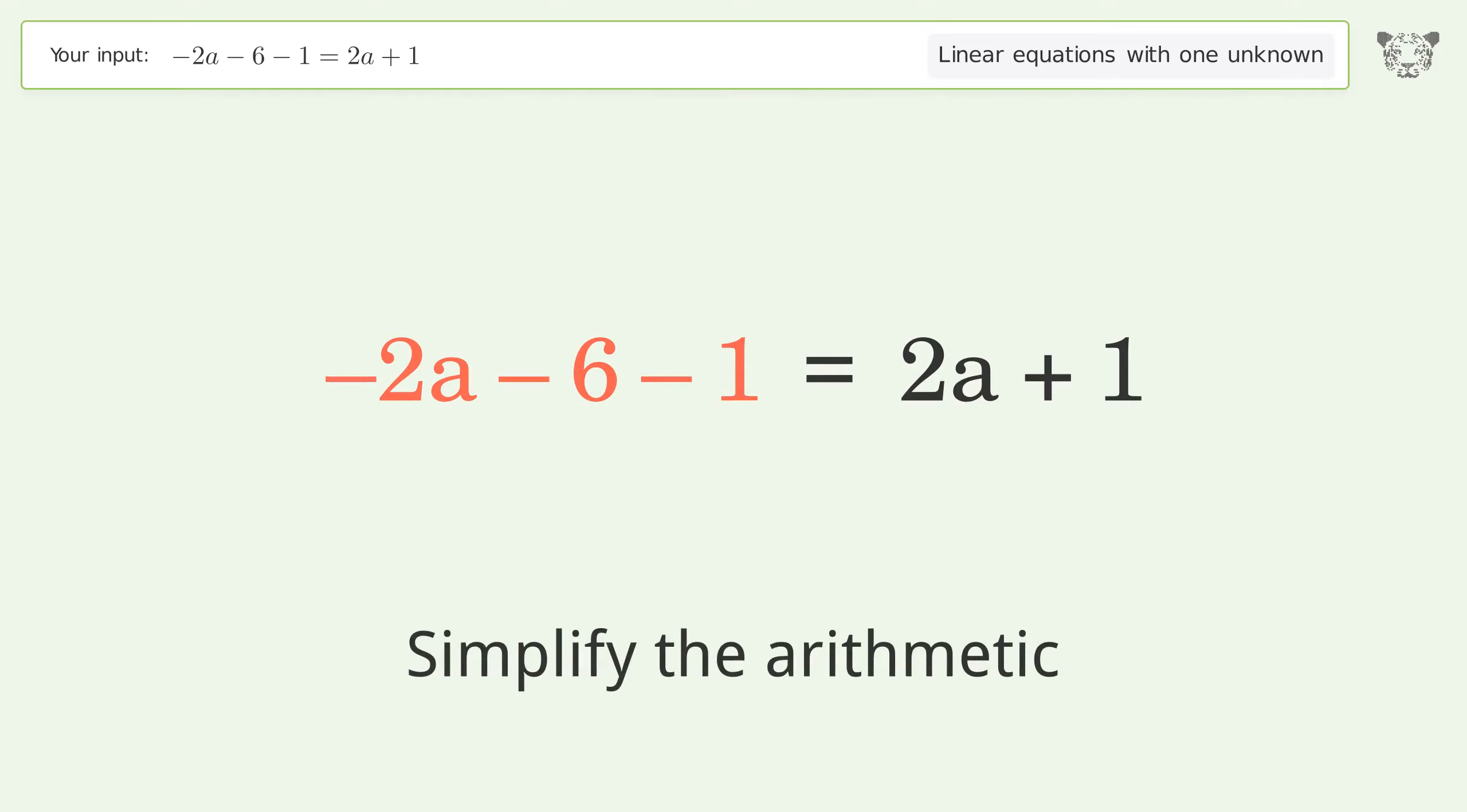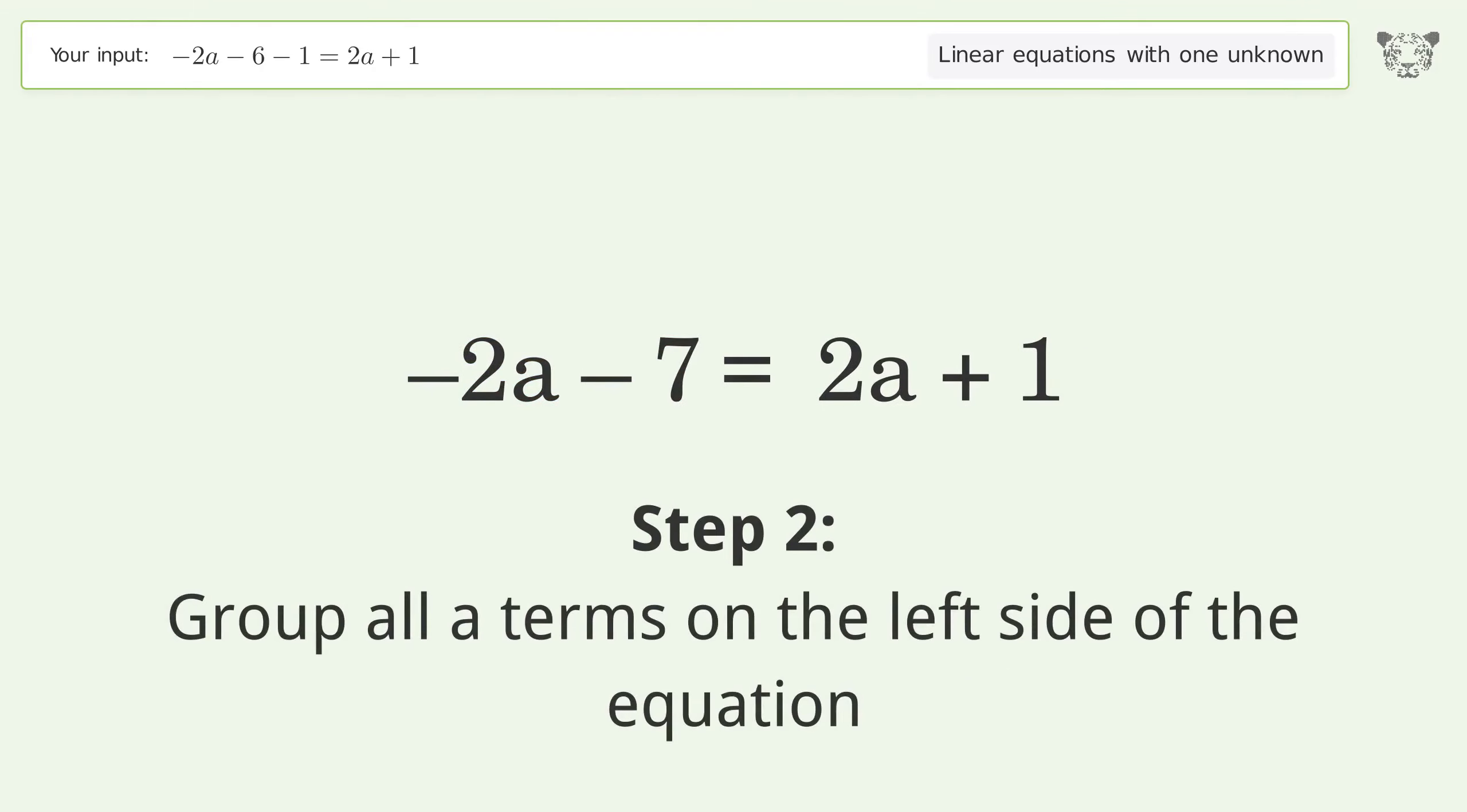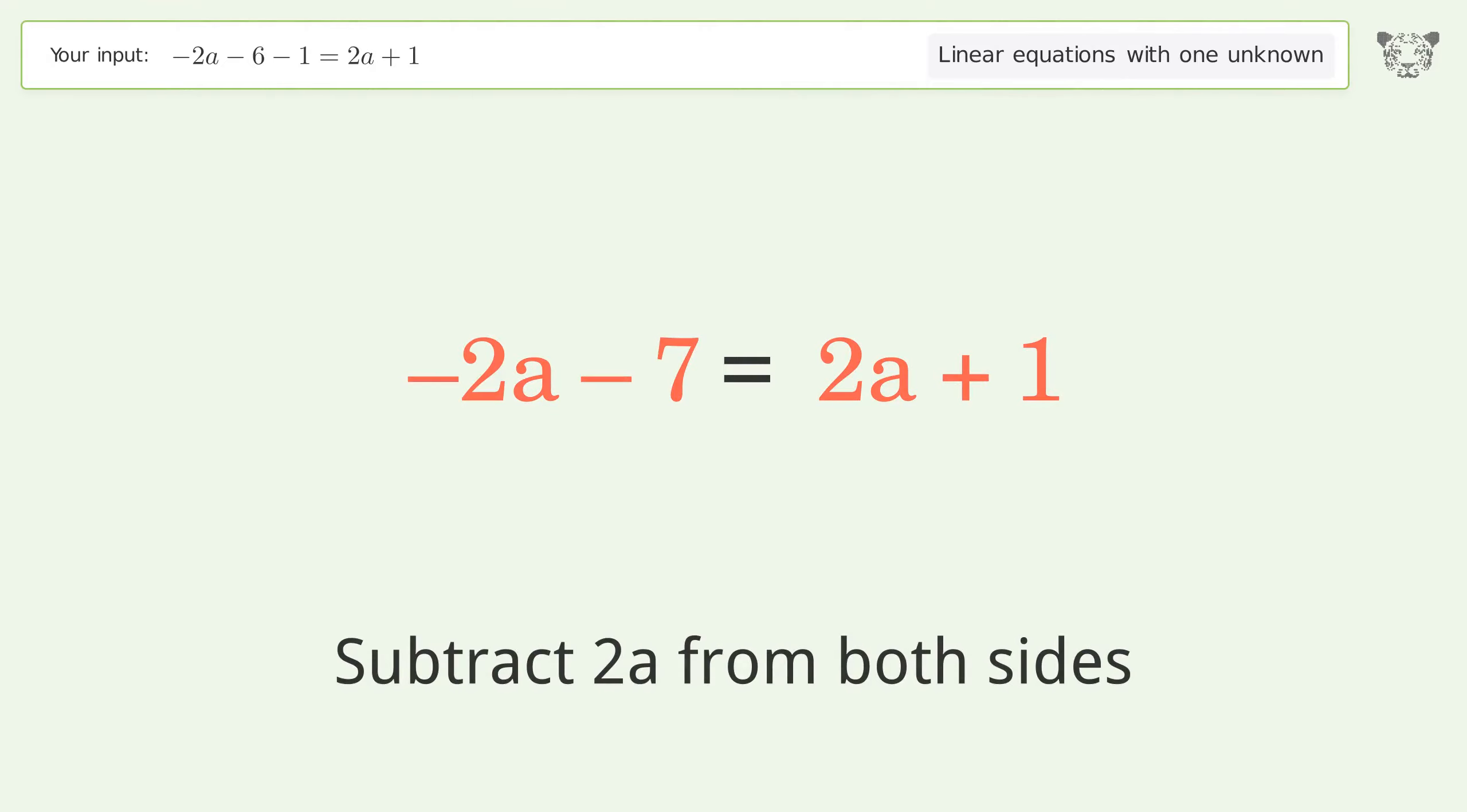Simplify the arithmetic. Group all a terms on the left side of the equation. Subtract 2a from both sides.